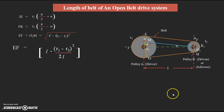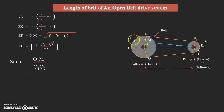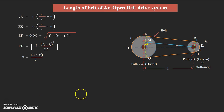The angle alpha must also be expressed in known terms. From the right-angle triangle O1O2M: sin α = O1M / O1O2 = (r1−r2) / L. Since alpha is a very small angle, sin α ≈ α, so approximately: α ≈ (r1−r2) / L  (in radians).